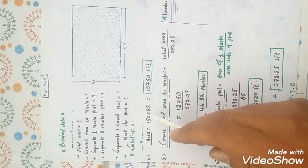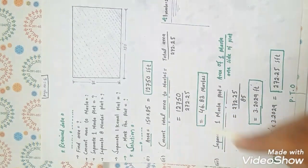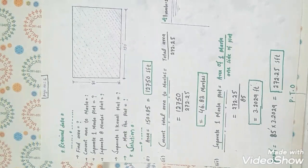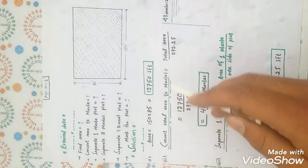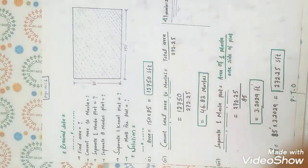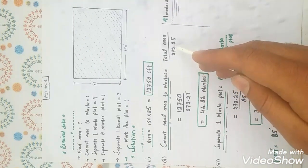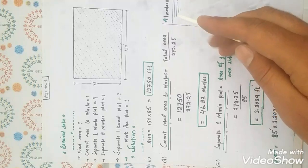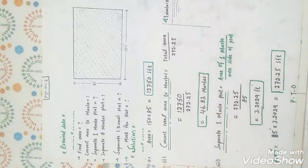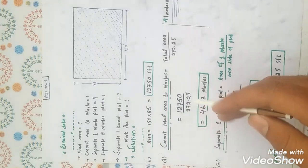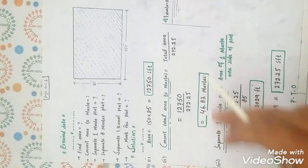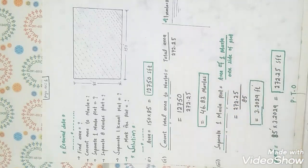First, the area is equal to 150 multiplied by 85, which equals 12,750 square feet. Now convert the total area to Marla. The formula is total area divided by 272.25. We know that one Marla is equal to 272.25 square feet. Dividing total area by 272.25 equals 46.83 Marla.